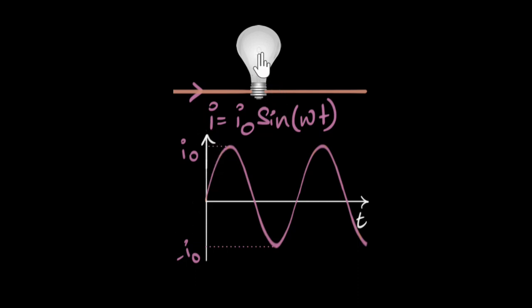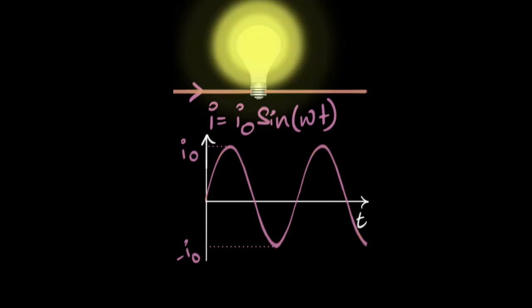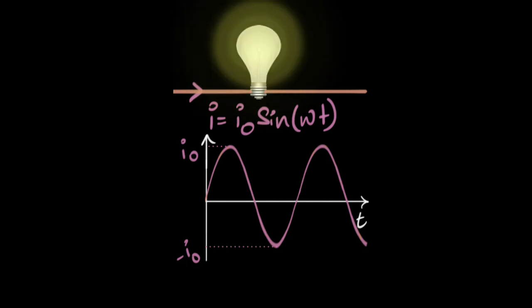When we pass alternating current through any resistor or a bulb, the power dissipated in that resistor, which I'm gonna show as the brightness of the bulb, will keep fluctuating because the current is alternating.